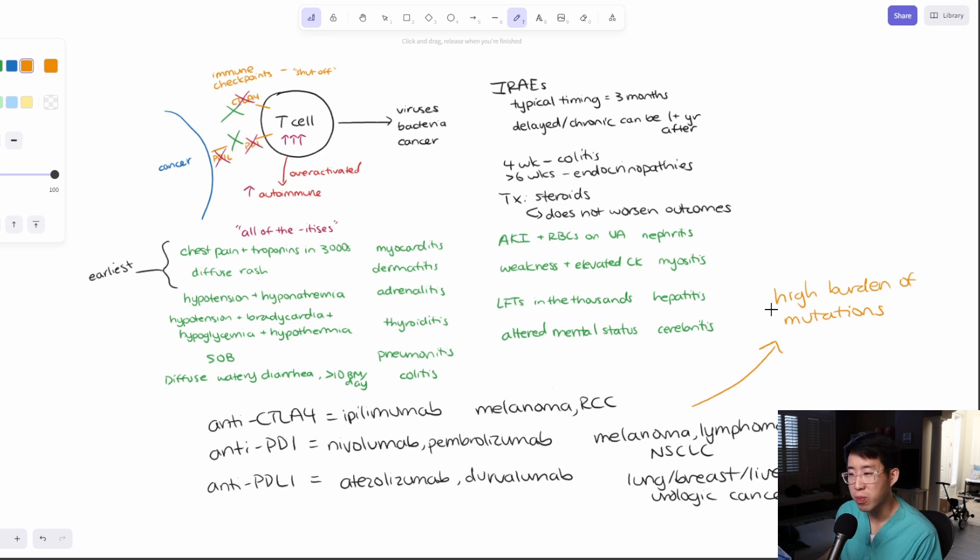Finally, there are a couple of other points. So anti-CTLA tends to have earlier adverse events, mainly because it affects the T cells earlier in their proliferation process. They basically work in the lymph nodes, whereas the PD-1 and PD-L1 antibodies tend to have later adverse effects.